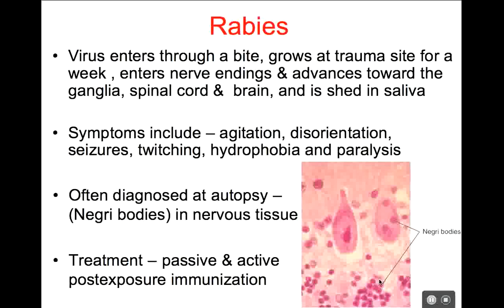Some parts of the world don't have rabies — Australia, Hawaii, New Zealand, and Great Britain are all rabies-free. They very tightly regulate bringing animals onto those islands because they're trying to keep it rabies-free. That's why they're so strict with their policies for bringing pets onto the island. Always, always go in for treatment if you get bitten by a wild animal.